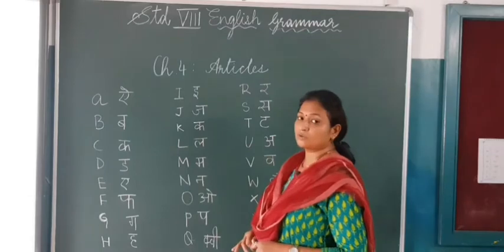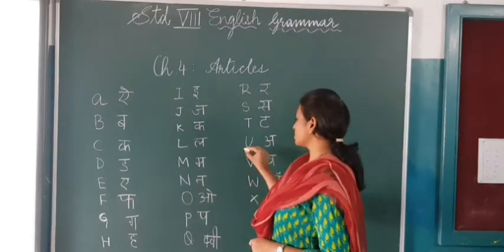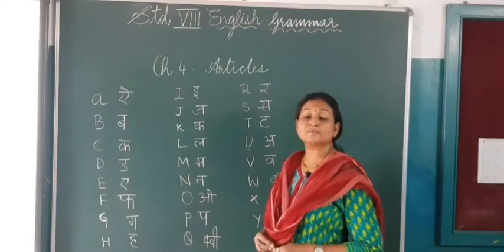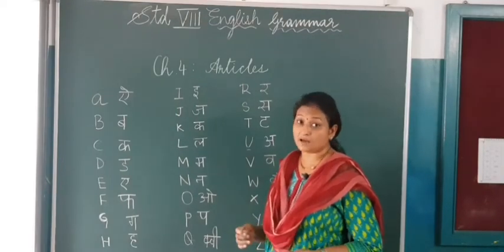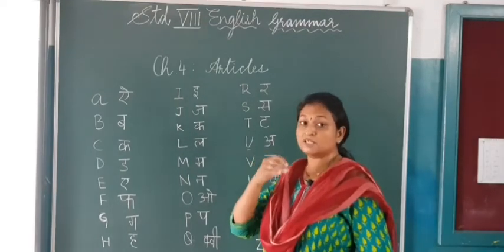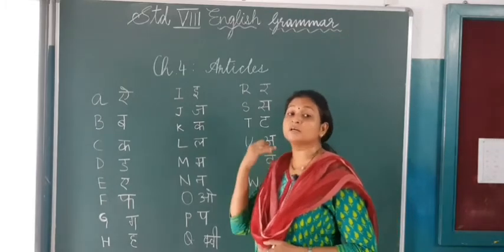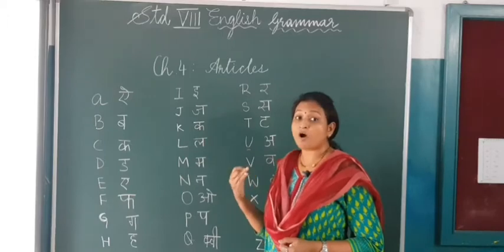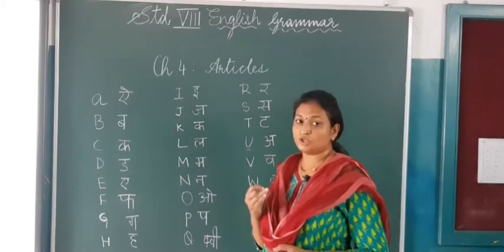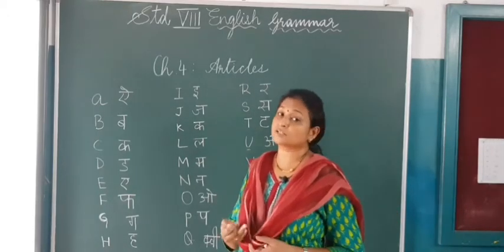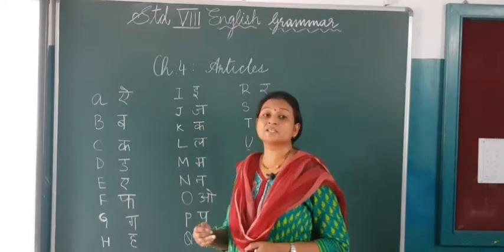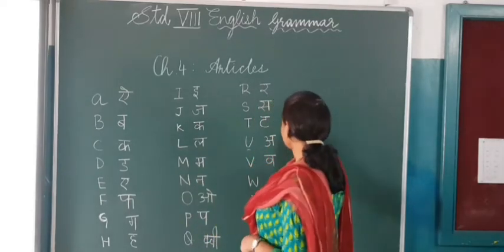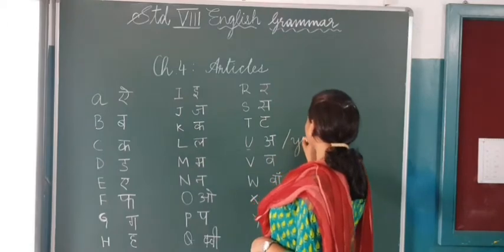U gives the sound — now, U is a vowel also. U is sometimes pronounced as 'u' and sometimes as 'a'. For example, umbrella — the spelling starts with U, but here U is pronounced as 'a'. And unicorn — here again the spelling starts with U, but it is giving the sound 'yoo'. So sometimes 'a' and sometimes 'u'.